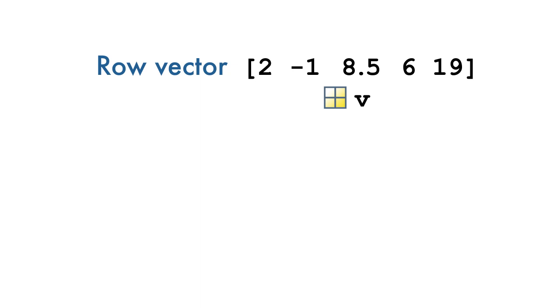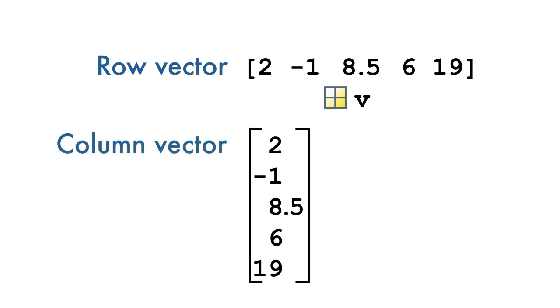Consider a row vector v. Because many matrix and vector operations require specific dimensions, we may need to convert a row vector to a column vector, or vice versa.